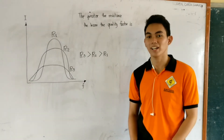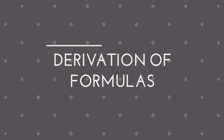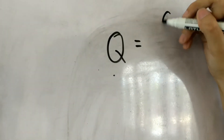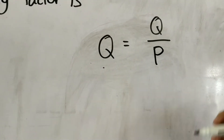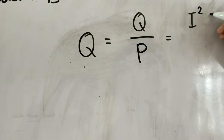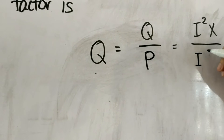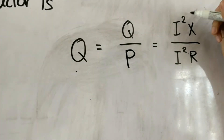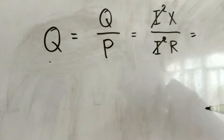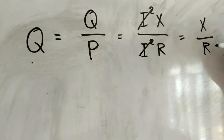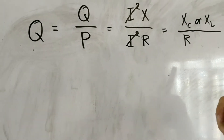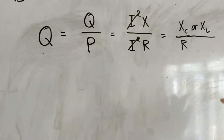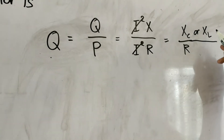Now, I will show you how to derive the formula to get the quality factor. Since we know quality factor is equal to reactive power over real power, and reactive power is equal to I-squared times reactance, and real power is equal to I-squared times resistance, we can cancel out the current, which leaves reactance over R. The reactance here is either XC or XL, since in the resonance circuit both XC and XL are equal. After this, we can also get another formula using this equation.